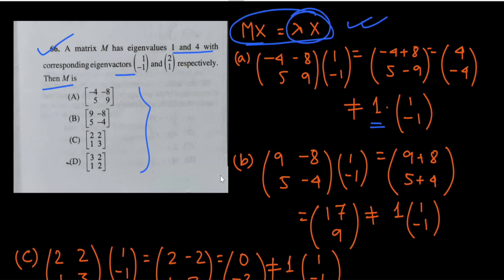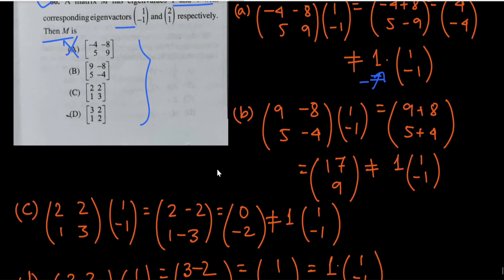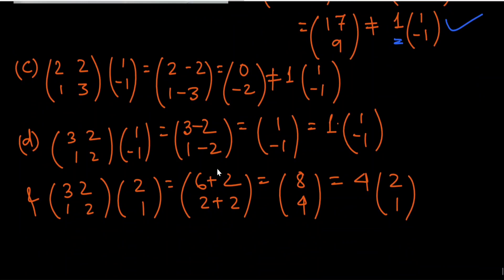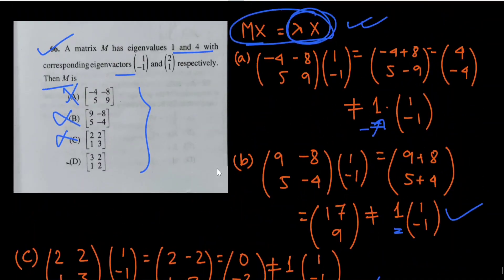Checking option A: M·[1,−1] gives [4,−4], which is not of the form 1·[1,−1], so incorrect. Option B gives [17, 9] for that eigenvector, also incorrect. Option C is similarly incorrect. For option D, Mx = λx is satisfied for eigenvalue 1 with eigenvector [1,−1] and also for eigenvalue 4 with eigenvector [2,1]. Therefore option D is correct.